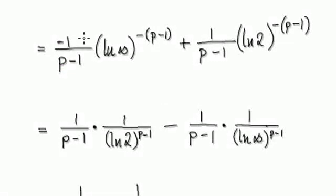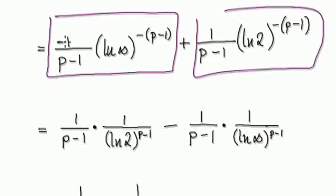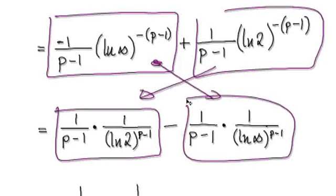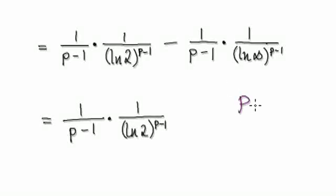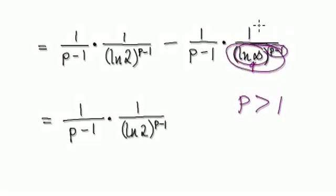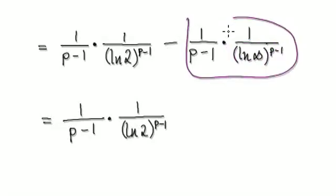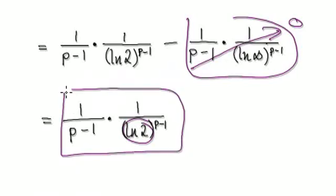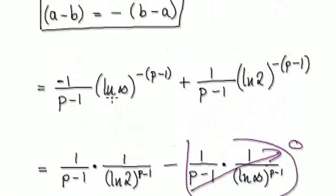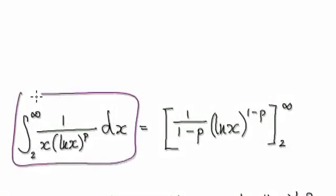Now you've got one block adding another block. Don't forget this is a negative block here. Switch these two blocks around — this block becomes this, nice and neat. Now remember, p is always greater than 1. So this exponent here will always be positive. This is a very, very big number raised to the power of a positive, meaning this whole term will be very, very big, meaning this whole thing — one over that — will be very, very small, heading towards zero. And this remaining term is a constant. So the integral comes to a finite number. It converges.